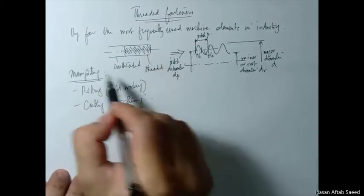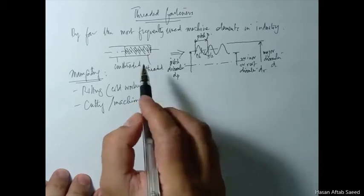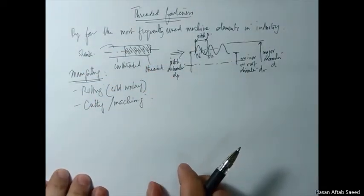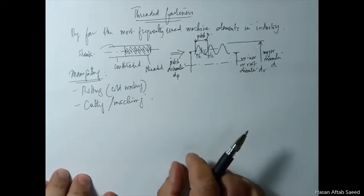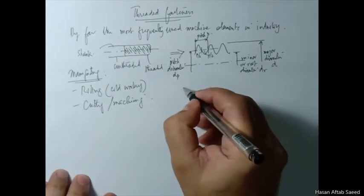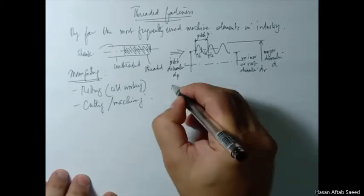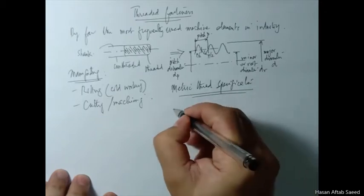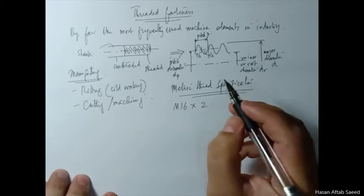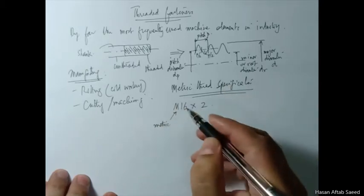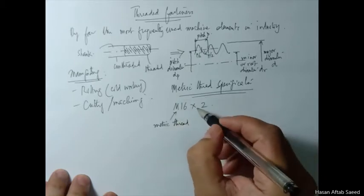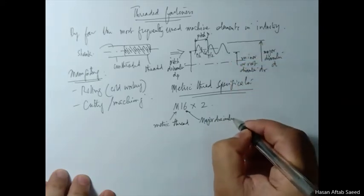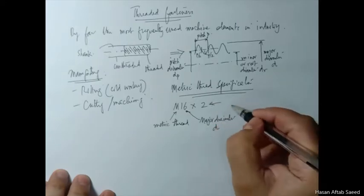In larger threaded fasteners there is always a shank area — it's called the shank — which is unthreaded, and then there is the threaded portion. When you talk about specifications, how do you specify a certain threaded fastener? For example, if you talk about metric threads, which we are going to focus on, a thread is specified in this manner: M16×2, for example. The M stands for metric thread.